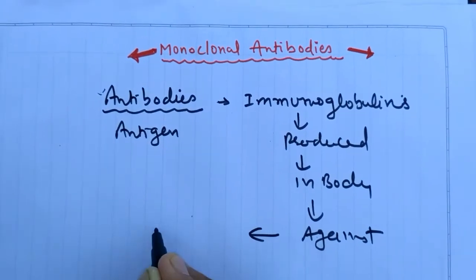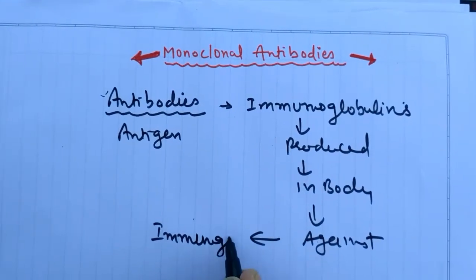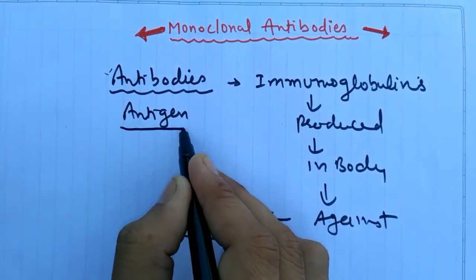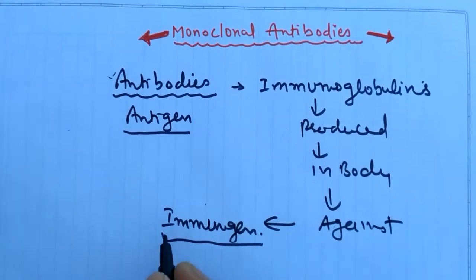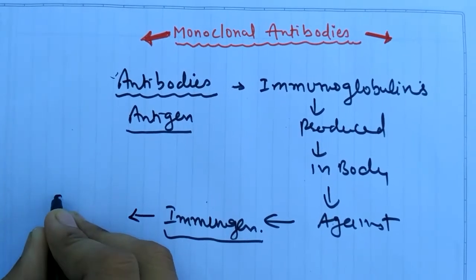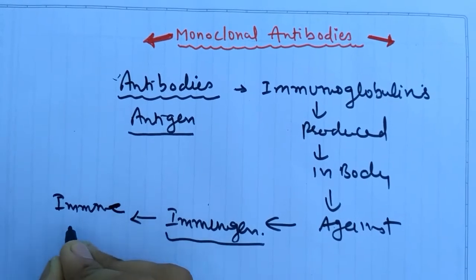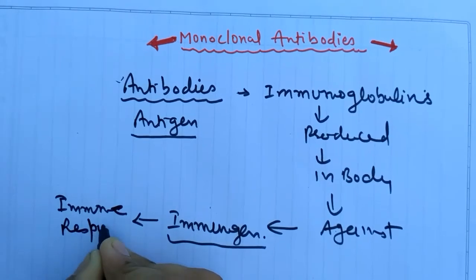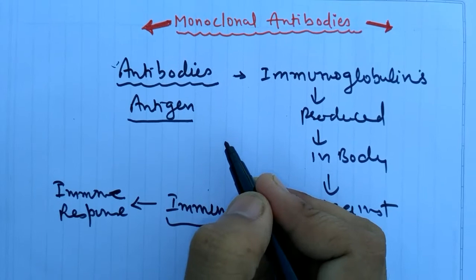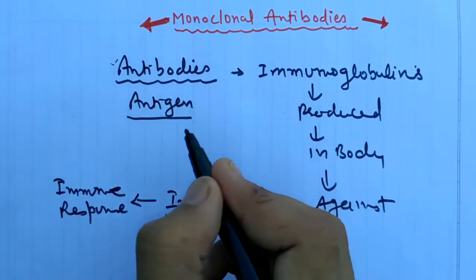Produced against immunogens. Immunogen and antigen are different things. Immunogen is the antigen that generates immune response. Antigen can be anything that is known as non-self to our body. It is not necessary that it will generate an immune response.